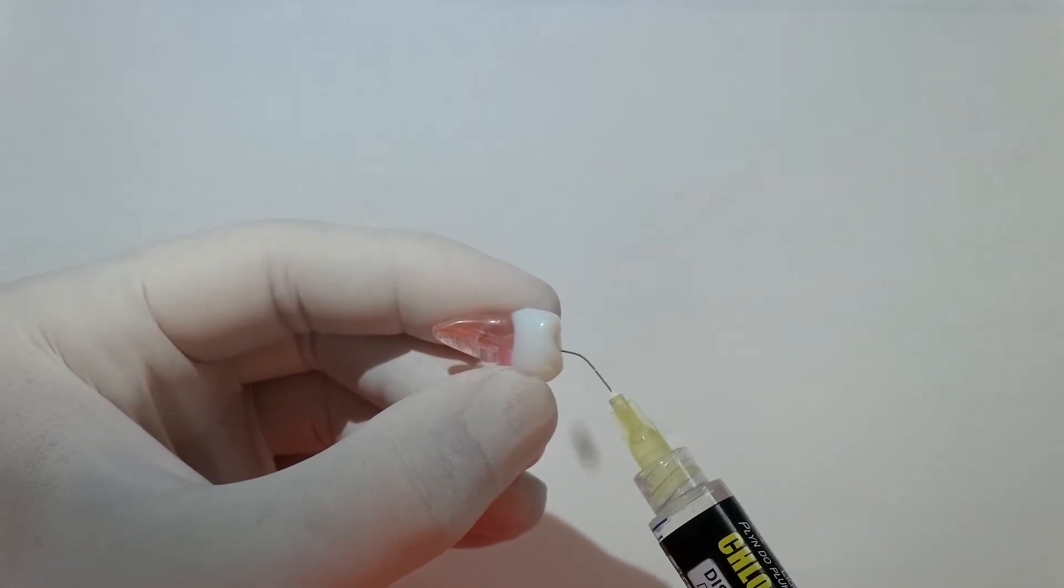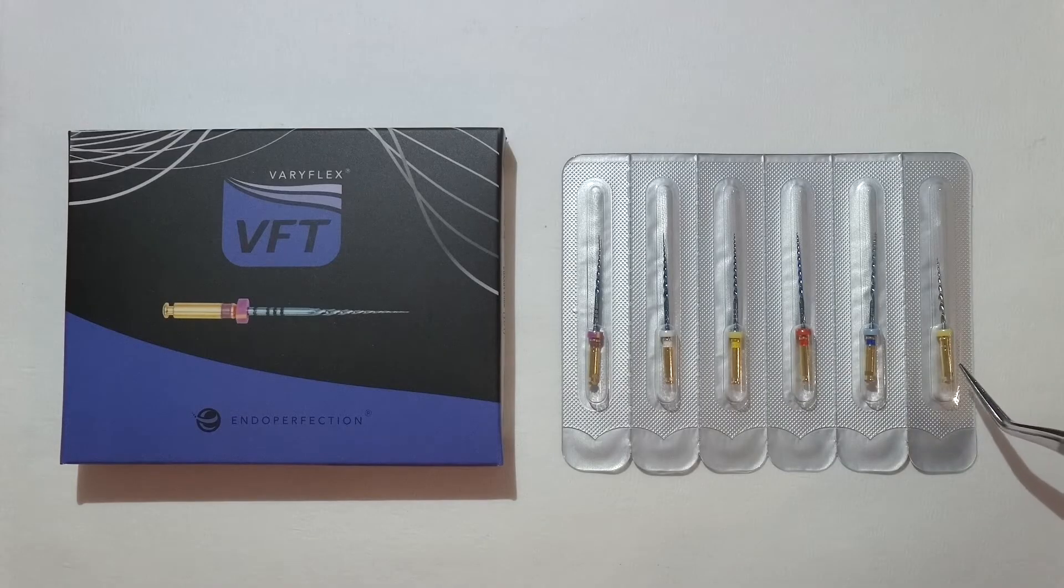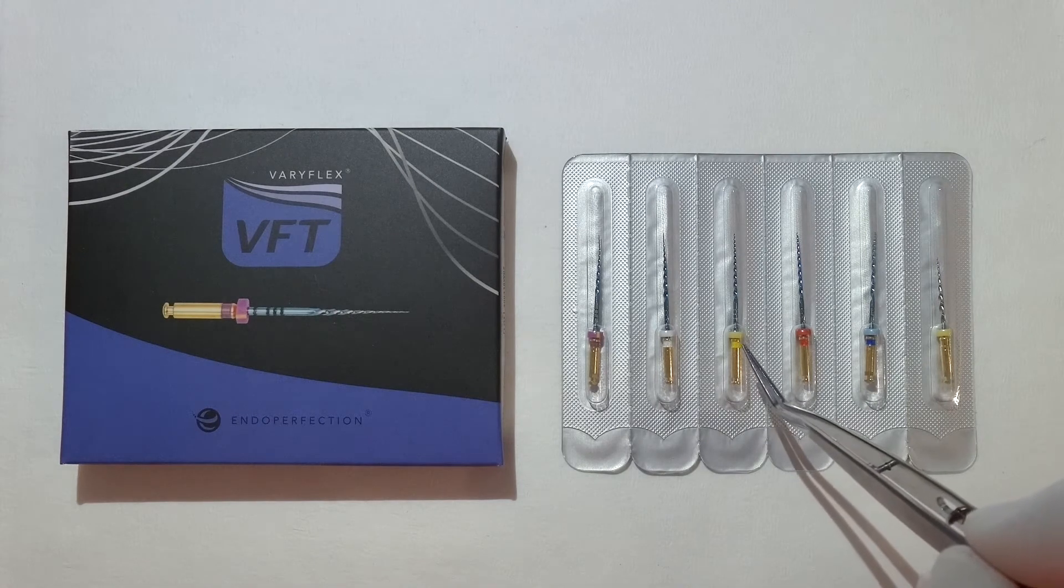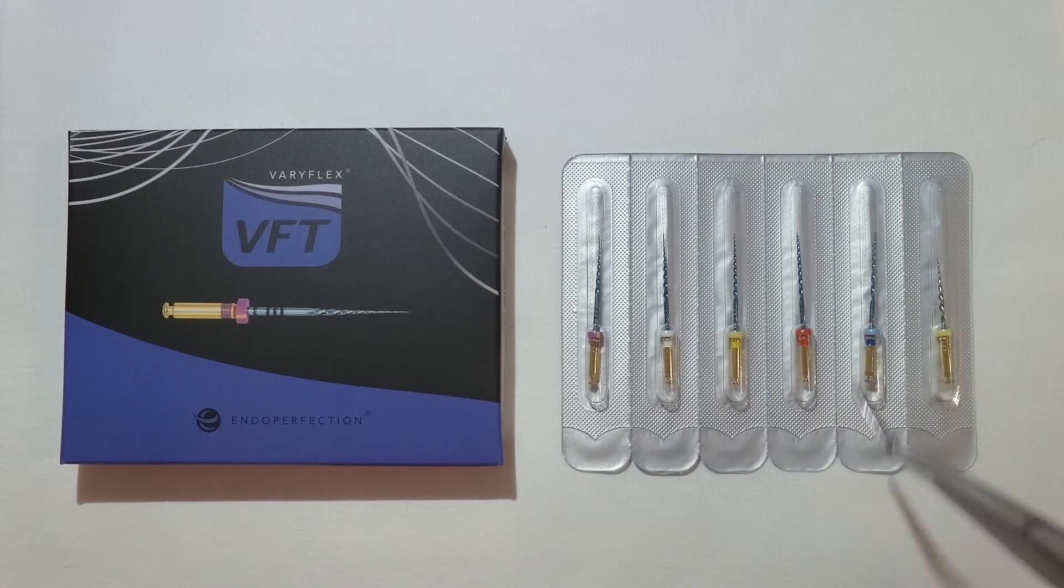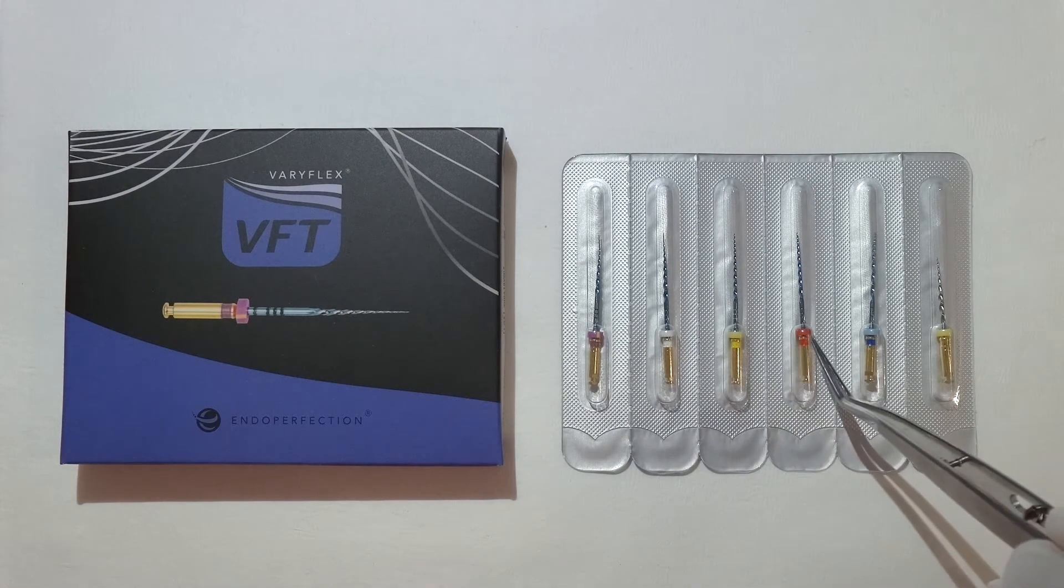Now we're going to use the VFT range. There's the SX right at the very end, we won't use that here. Then we've got the purple, white, yellow, red, blue. We've got the S1, S2, and then our finisher files: the yellow, the red, and the blue to finish with.